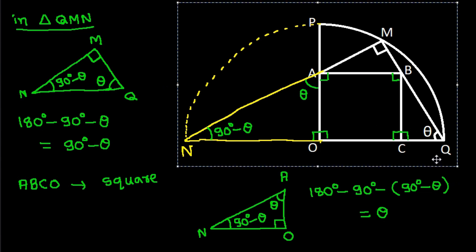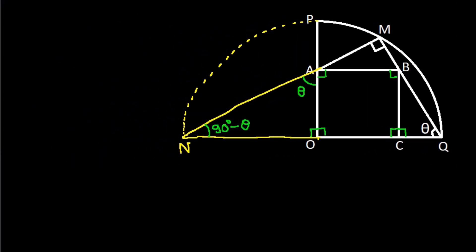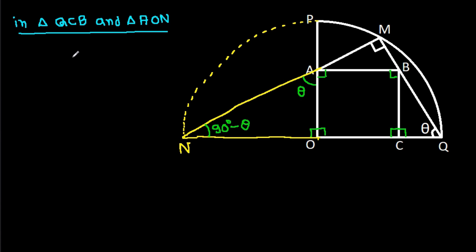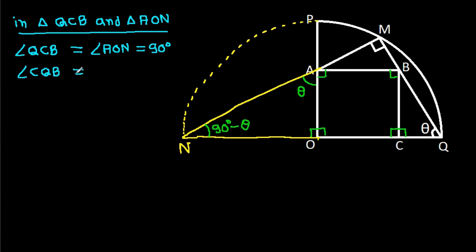Now, in triangle QCB and triangle AON: angle QCB is equal to angle AON, that is 90 degrees, and angle CQB is equal to angle OAN, that is theta. So triangle QCB is similar to triangle AON.